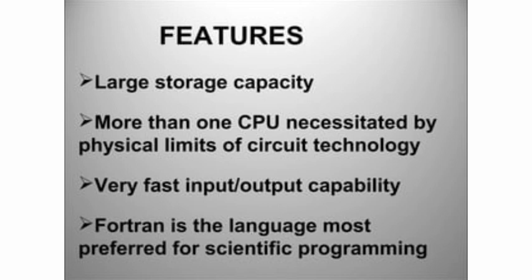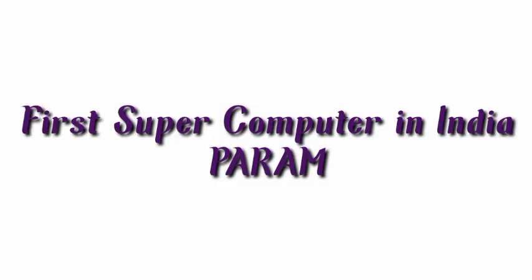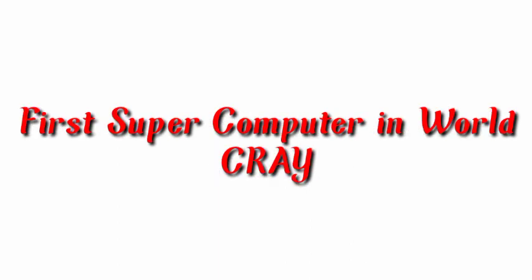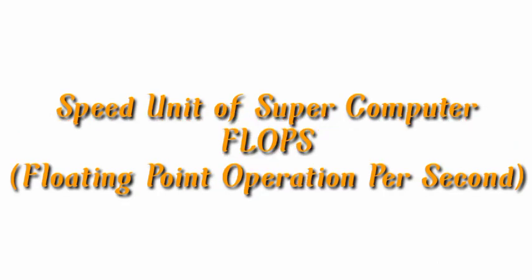Let's talk about the first one — supercomputers. These provide real-time access or instant calculations. They are large in size and the fastest, performing calculations of the most complex values without any delays. Examples include ATMs and OTPs. The name of the first supercomputer of India is PARAM.